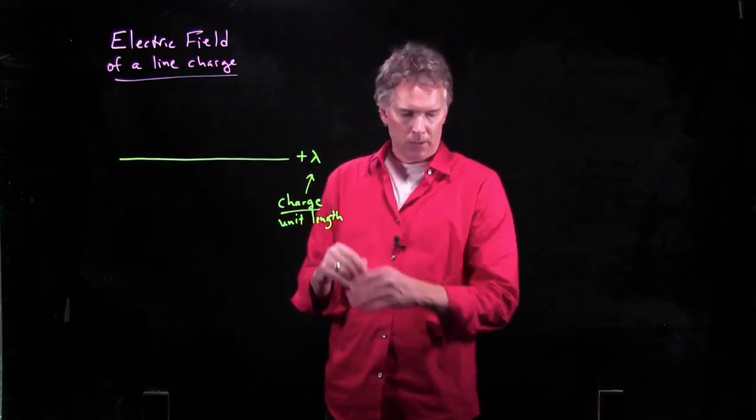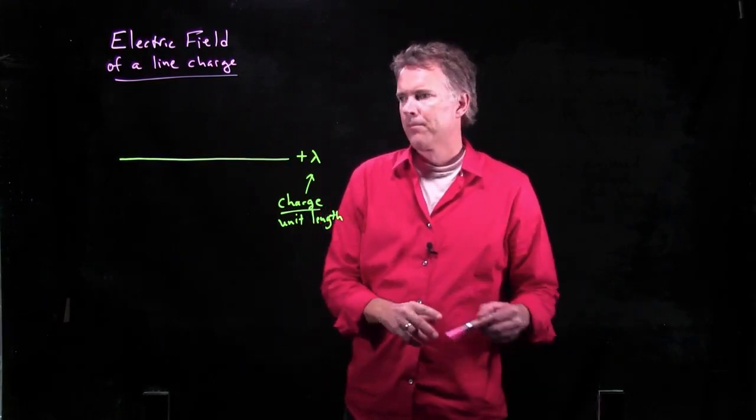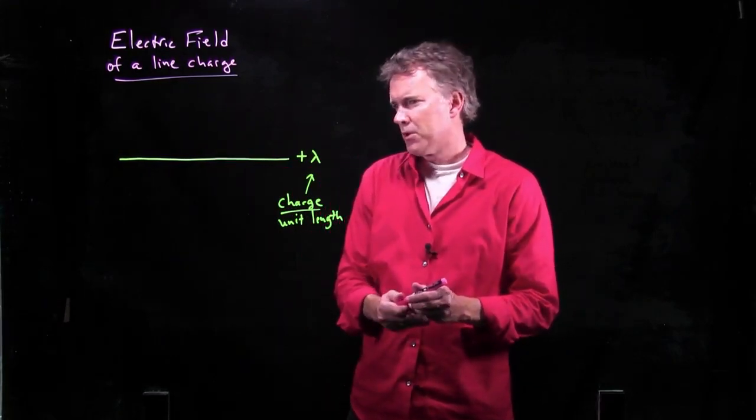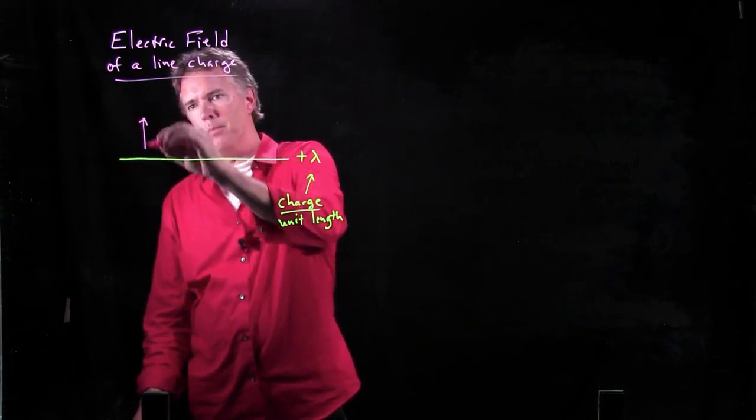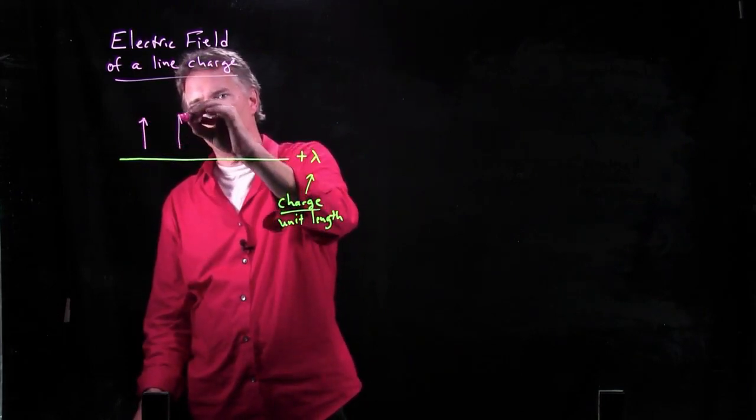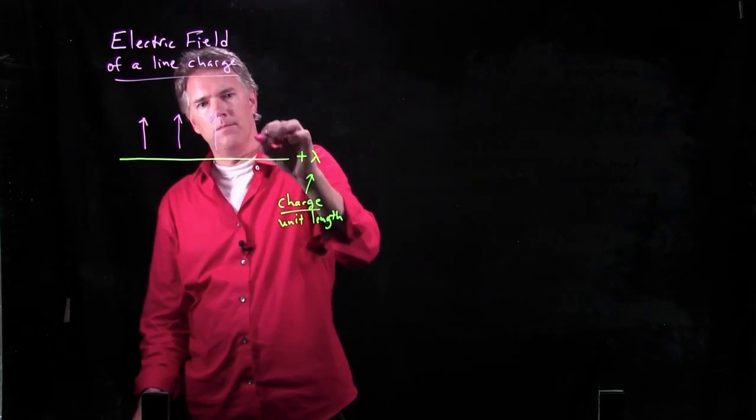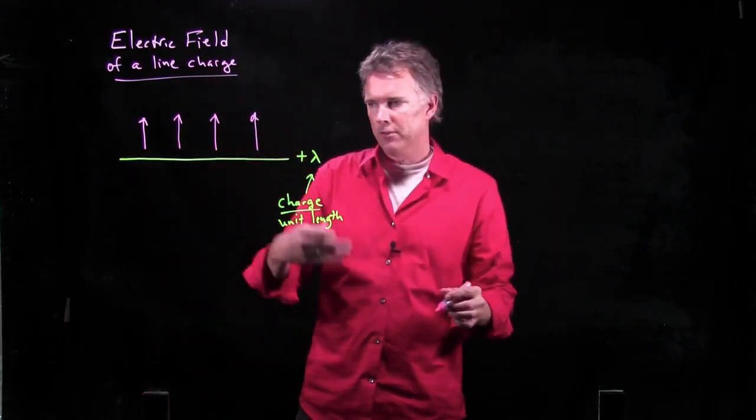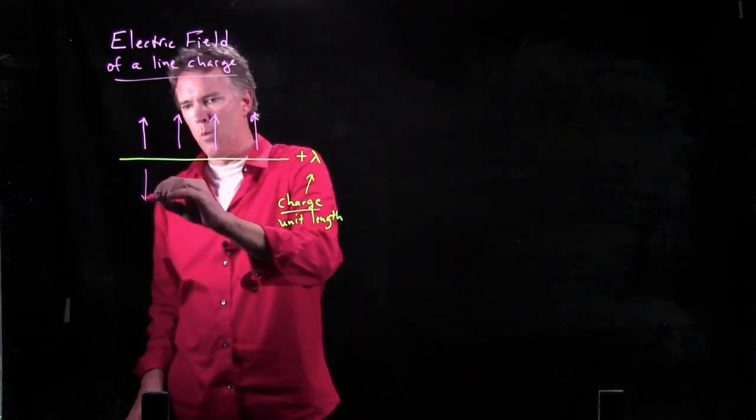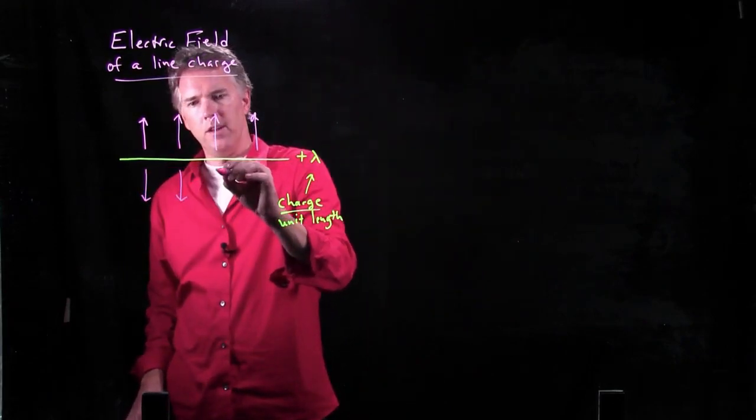Well, what does the electric field around it look like? By symmetry, we could say that the electric field must be pointing out in this direction. But if this is a positive charge, of course, it's going away from all the positive charges everywhere.